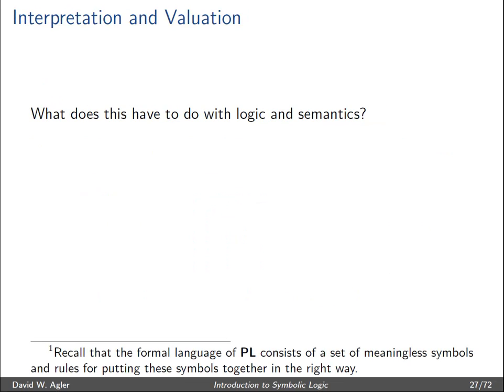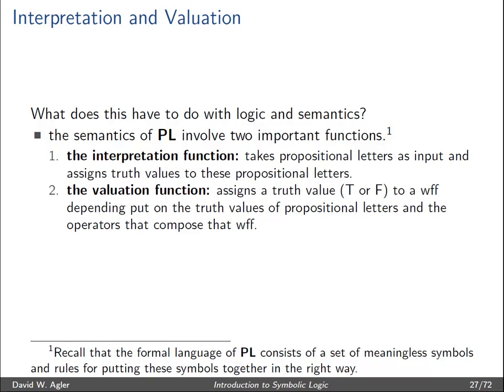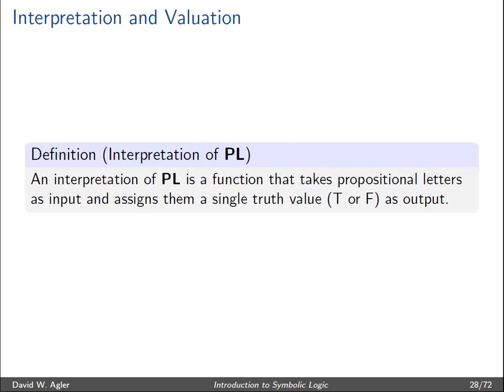So what does this have to do with logic and the semantics of logic? The semantics of the language of propositional logic involve two important functions. The first is the interpretation function, which takes single propositional letters as input and assigns truth values to them — relating each propositional letter to one and only one truth value, either true or false. The second is the valuation function, which assigns a truth value to a well-formed formula depending on the truth values of the propositional letters and operators that compose it.